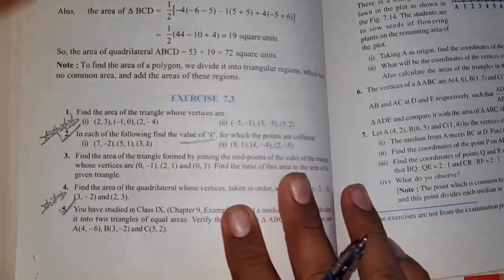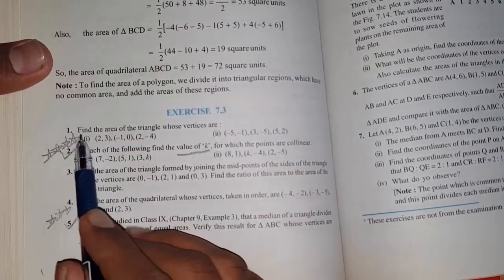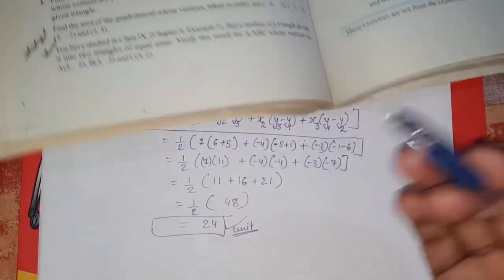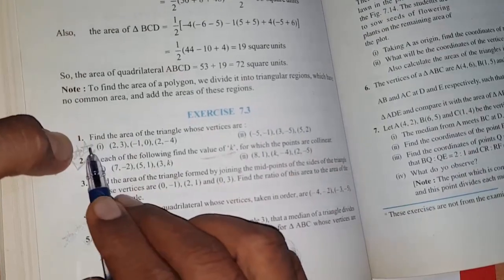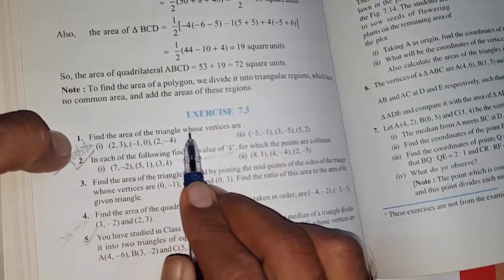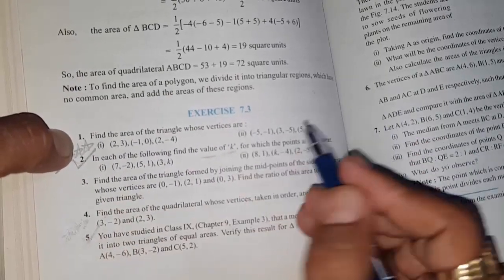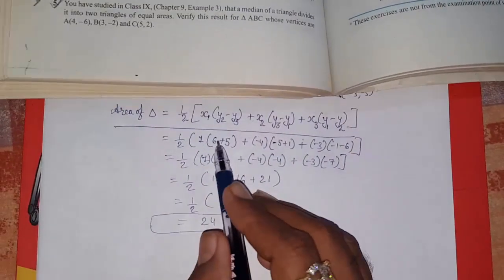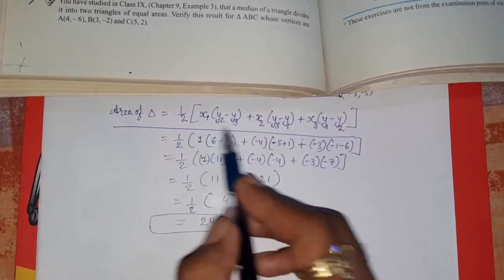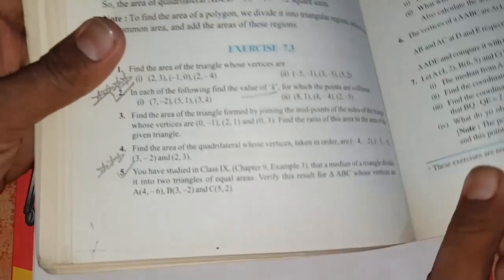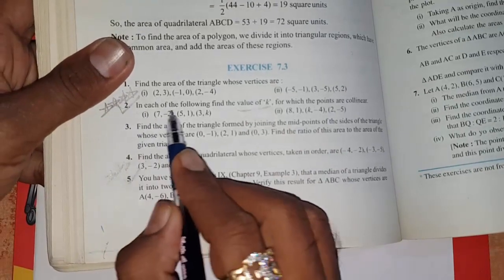Moving towards exercise 7.3. This exercise involves the same concept we just learned — finding the area — but they will give you different types of sums. The first question says: find the area of a triangle whose vertices are given. They give you three simple coordinates and you have to find the area, so you directly apply the formula and put in the numbers to get the answer.